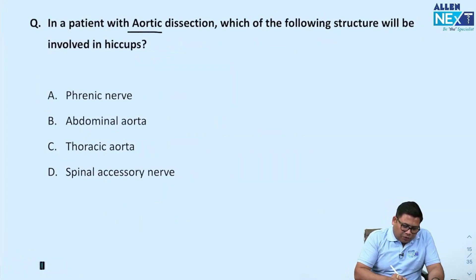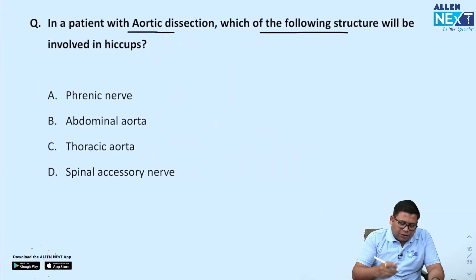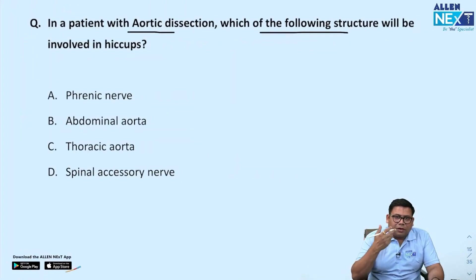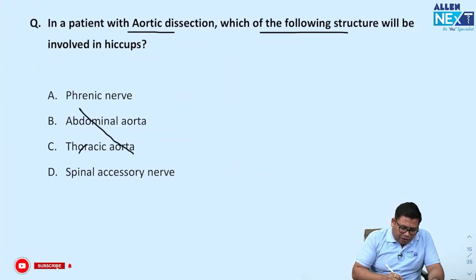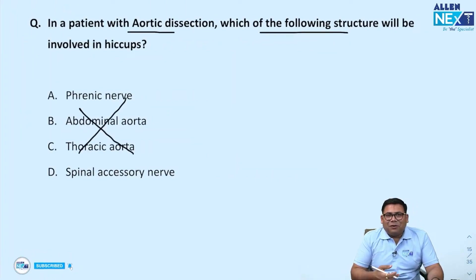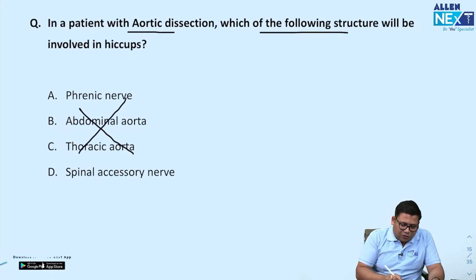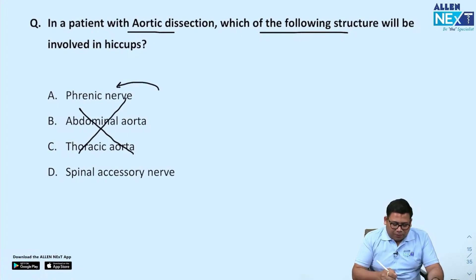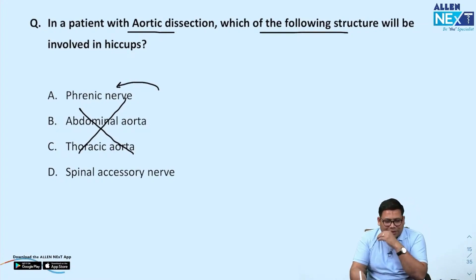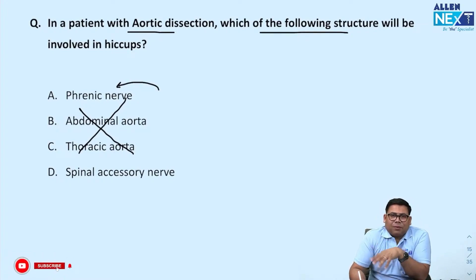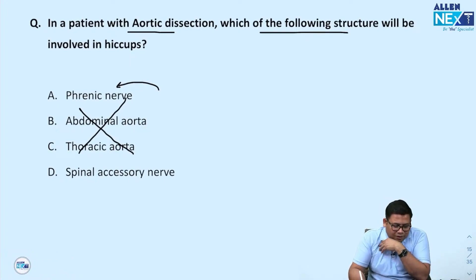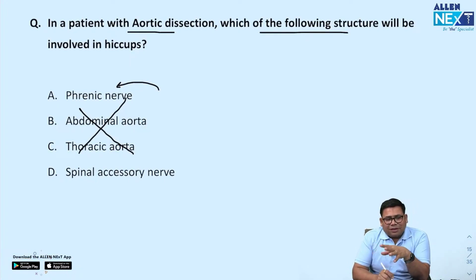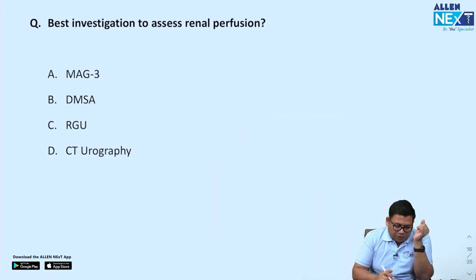Next: a patient with aortic dissection develops hiccups. Why hiccups? It is due to irritation of the phrenic nerve. The spinal accessory nerve supplies the trapezius — that would cause pain radiating to the scapula or shoulder. But in this case, it is the phrenic nerve causing the hiccups.